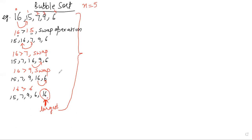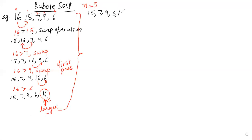These entire steps are called a pass. After the end of my first pass, we can see that the largest element is at the last position — its final destination. But with the end of my first pass, the entire array has not been sorted yet. The new array is 15, 7, 9, 6, and 16. I need to perform the steps all over again so that all elements in the array are in sorted order.